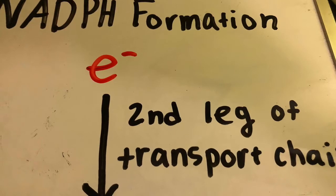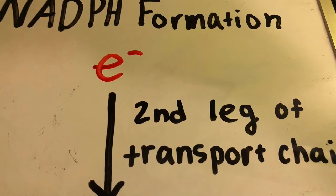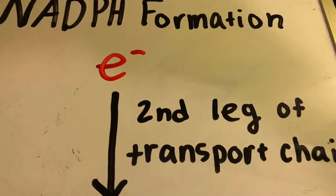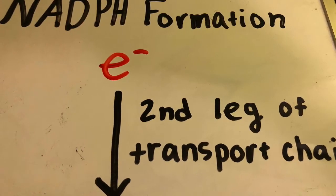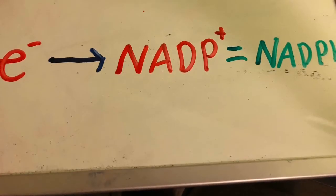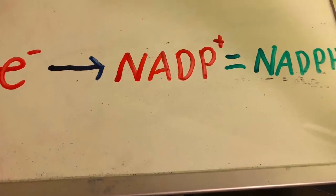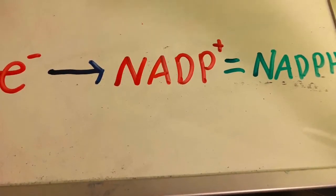The final stage of the light reaction process is the formation of NADPH. This occurs when the high energy electron travels down a short second leg of the electron transport chain. At the end of the chain, the electron is passed to NADP plus, along with a second electron from the same pathway, to make NADPH.